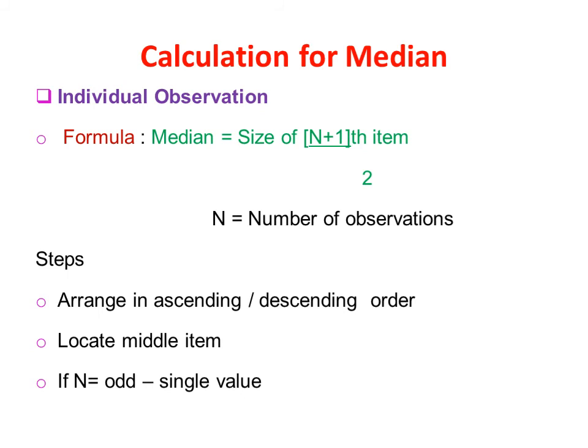For individual observations, the formula for median is: Median = size of the (N+1)/2 th item, where N is the number of observations. The steps are: arrange the data in ascending order, then find the middle item using the formula.